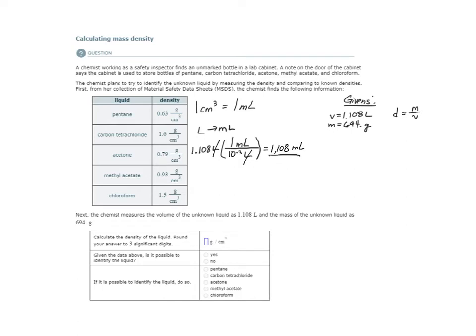So now that we have this volume measurement in the units of milliliters, we can plug it into the density equation and get the units that we want because we know that a milliliter is equal to cubic centimeters. So we could just use those interchangeably. So the density is equal to the mass of 694 grams divided by the volume now in milliliters, 1,108 milliliters.